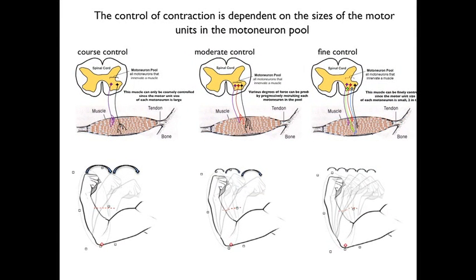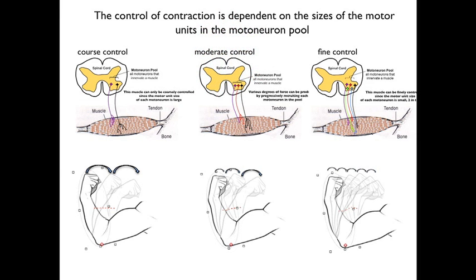So in summary, the control of contraction is dependent on the sizes of the motor units in the motor neuron pool. Muscles in which the motor unit sizes are large can only be coarsely controlled. Muscles that have a variety of motor unit sizes can be more finely controlled than muscles with only large motor units, but not as finely as muscles in which the motor unit sizes are very small.